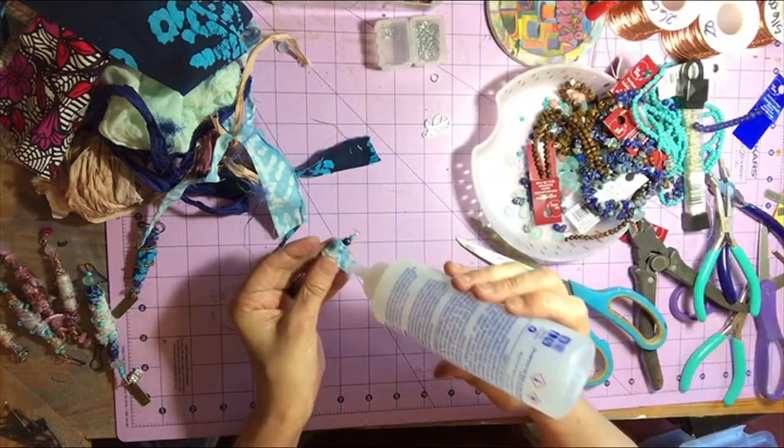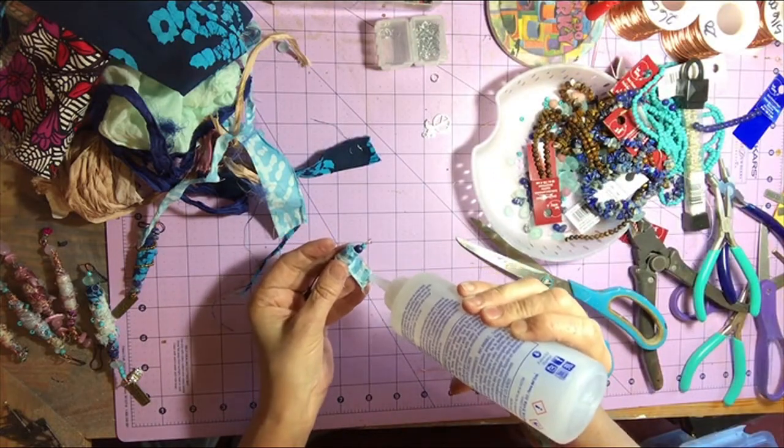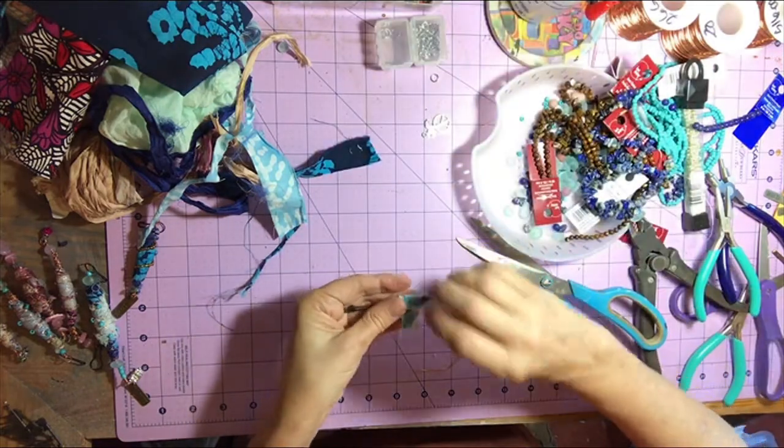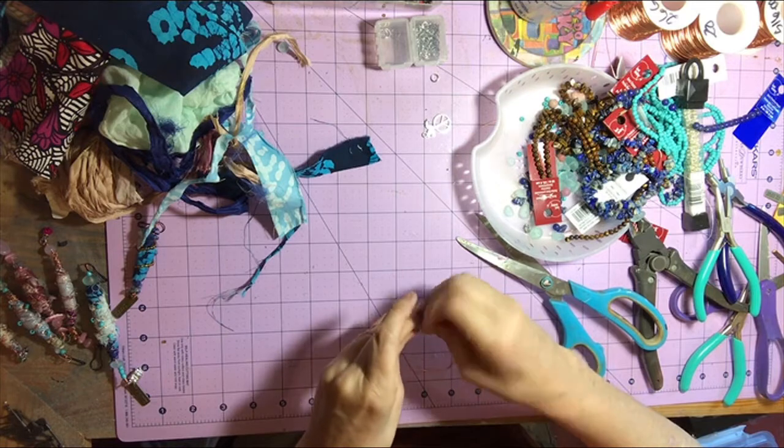Okay, so now you have the foundation of your boho bead together. There's a number of things that you can do now. You can come back with a piece of lace, a piece of cheesecloth, whatever you choose.